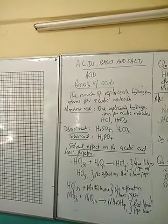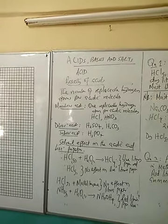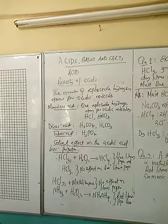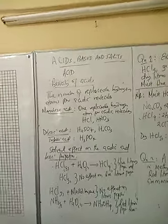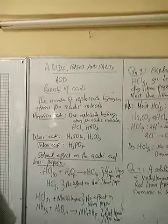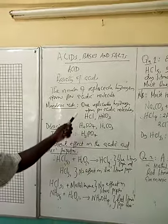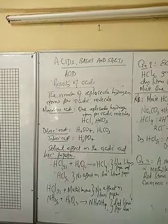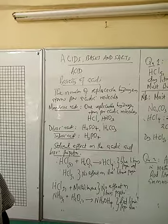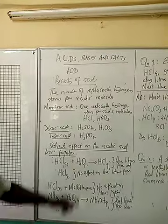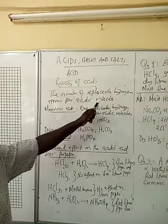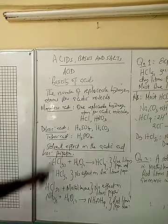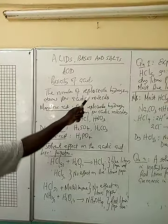What is basicity of acid? This is the number of replaceable hydrogen atoms per acidic molecule. Also, we can say that the number of replaceable protons per acidic molecule.